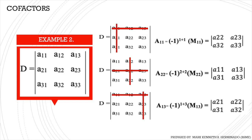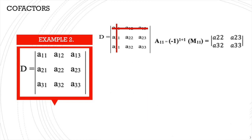For example number 2, same given siya as example number 1. Pero dito, ang kukunin natin ay cofactors. Gaya nga ng sabi ko kanina, cofactors and minors are actually the same — it's just that the cofactors are signed minors. Para makuha ang cofactor ng a11, kailangan nating gamitin ang formula for cofactors, which is equal to negative 1 raised to row number plus column number times the minor.